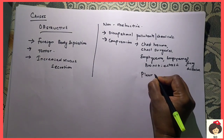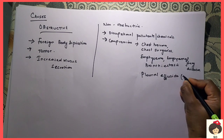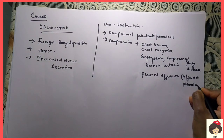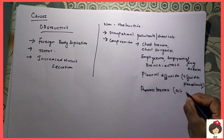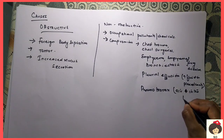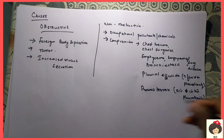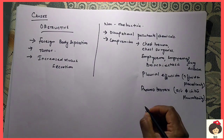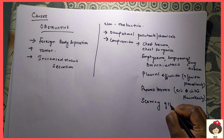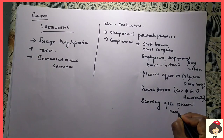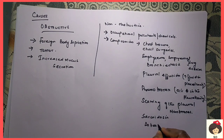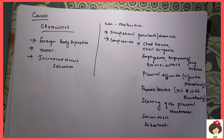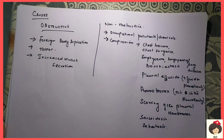It can also be due to pleural effusion — increased fluid filled in the pleural cavity — and pneumothorax, which means air filled in the pleural cavity. Chest trauma, chest surgery, emphysema, bronchiectasis can cause scarring of the pleural membranes. Diseases like sarcoidosis and asbestosis are more common in persons working in mines, cement factories, and other areas where people are heavily exposed to chemicals, which can cause Atelectasis.